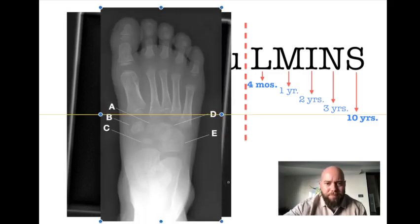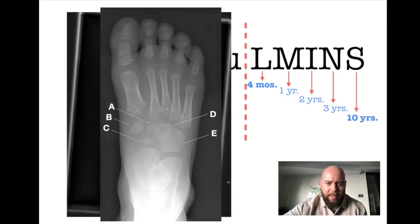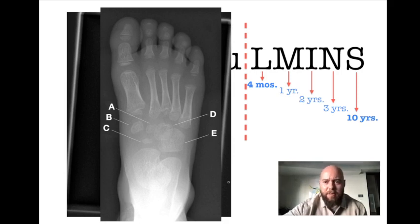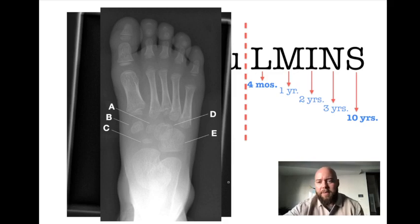Let's try another example. We have a patient with many blobs in the midfoot. From right to left: E is the cuboid, D is the lateral cuneiform, A is the intermediate cuneiform — vaguely there but present — B is the medial cuneiform, and C is the navicular, very tiny. So we see the navicular in order from L-M-I-N-S. Do we see S for sesamoids? No, we do not. So this patient is three years old.